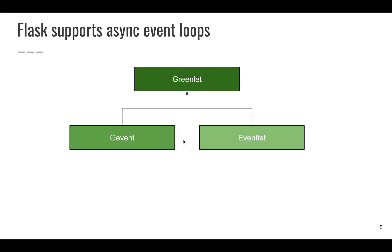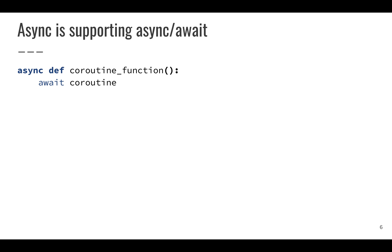This is one definition of async, and Flask has supported async event loops for a long time — they're based on greenlets. Instead of calling them tasks, they're called green threads. Eventlet and Gevent are two common flavors of the event loop, and there are others. They work really well; there are great production systems based on this.